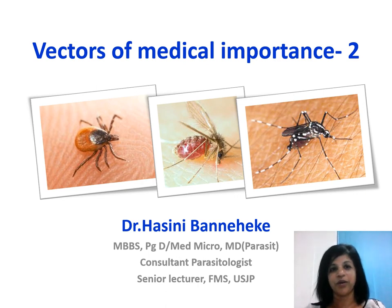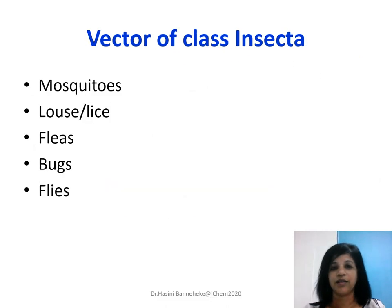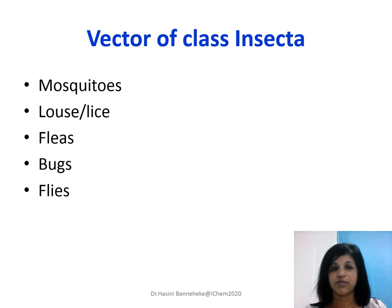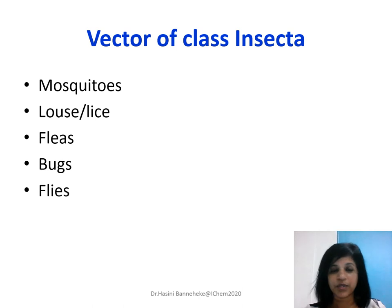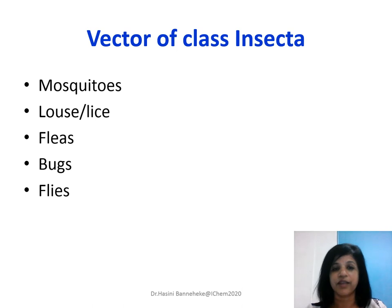We are going to talk about vectors of medical importance. In that, we are going to talk about the class Insecta. This class Insecta has various vectors transmitting diseases to humans. Among them are mosquitoes, lice, fleas, bugs, and flies. Of those, we will talk about lice, fleas, bugs, and flies today.